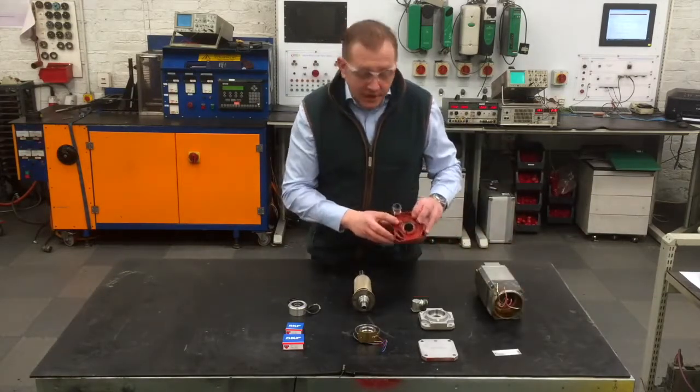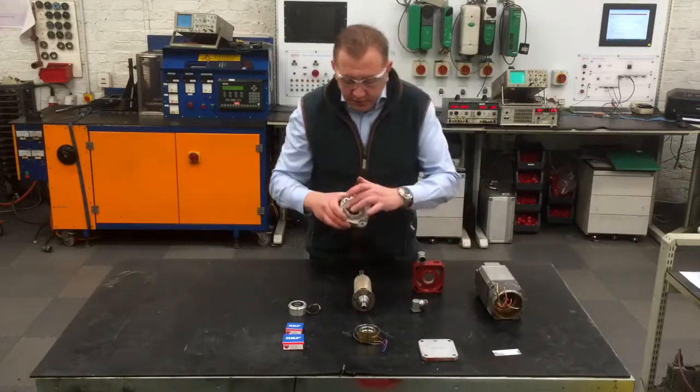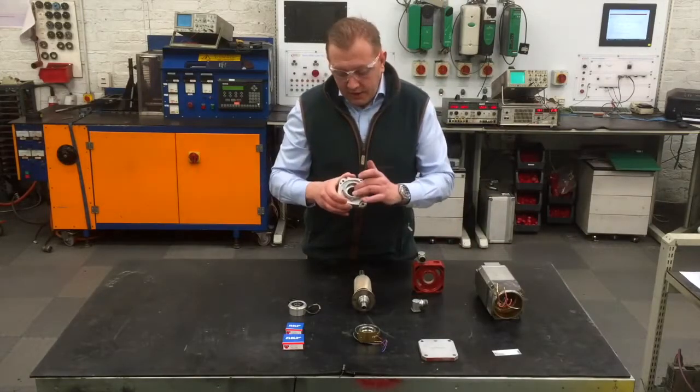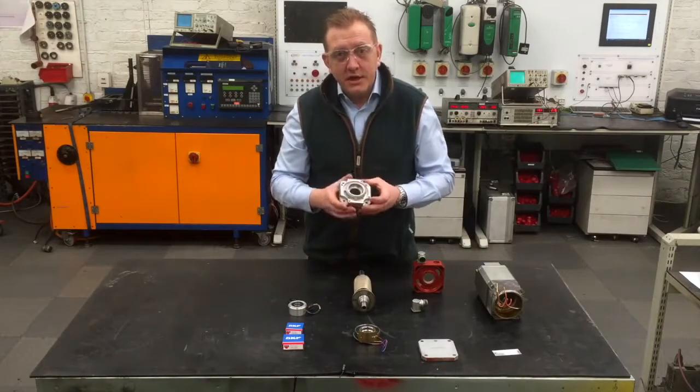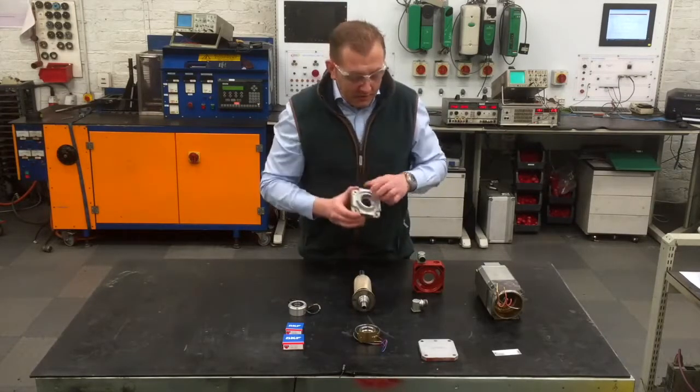The end shields have been checked and this is the drive end shield where we had to remachine. We have shrunk fit a sleeve in here and we have machined to size. And we have checked the size on the CMM machine so we know it is the right tolerance for the bearing.